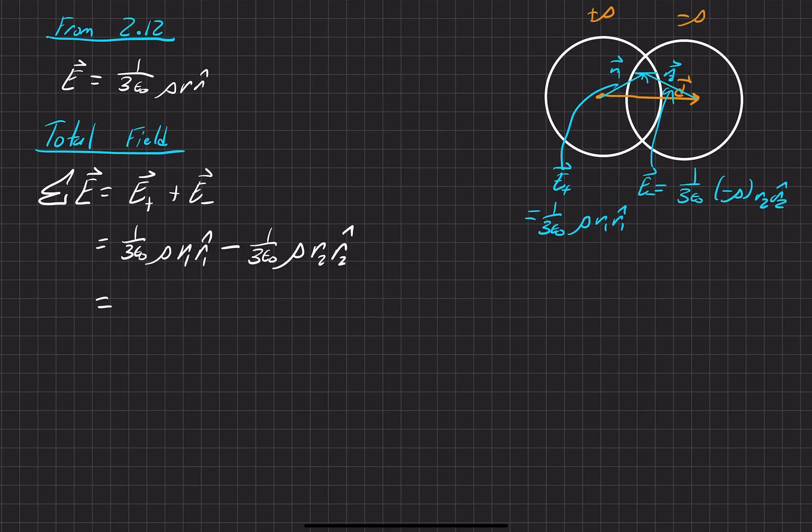And what we're able to do is just do some algebra, just concentrating on the like terms here and just pulling them out in front. We have 1 over 3 epsilon naught times rho times the quantity of, we'll just go ahead and call this r1 vector, because it's both the magnitude and the direction here, and then r2 vector here.